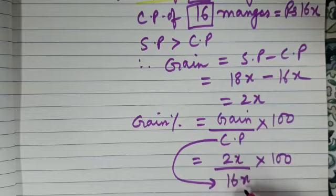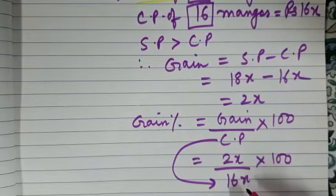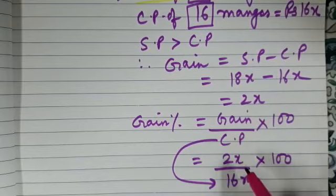So 2x upon 16x. Please remember, you don't have to put here 18x because we have taken cost price and selling price for 16 mangoes for calculating the gain or the loss. So 2x upon 16x into 100.